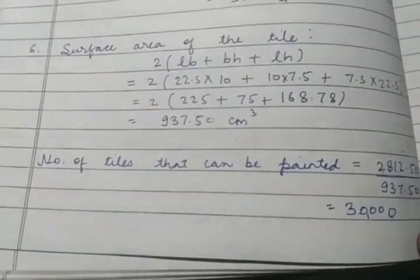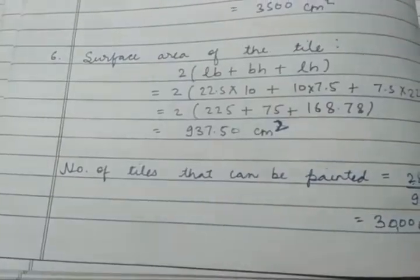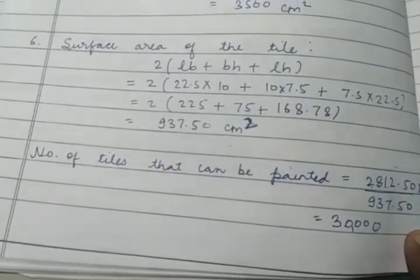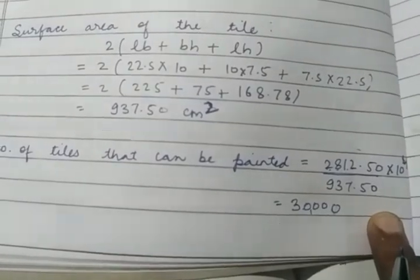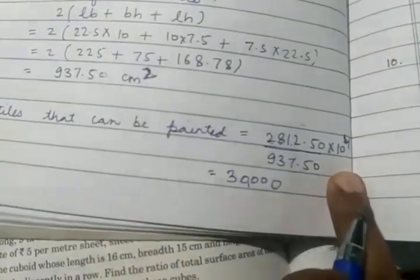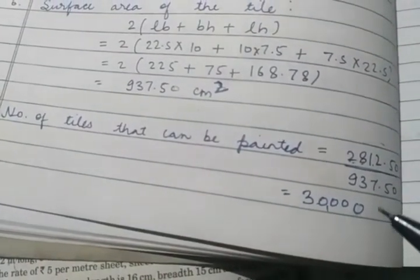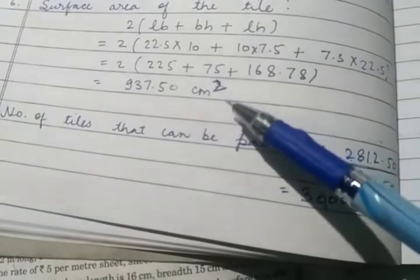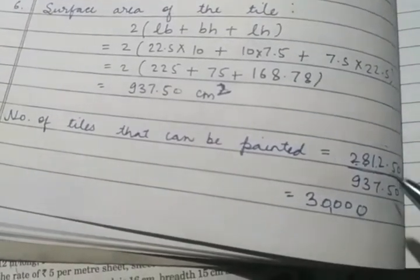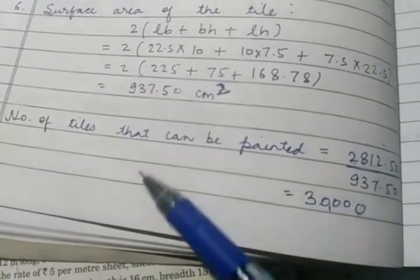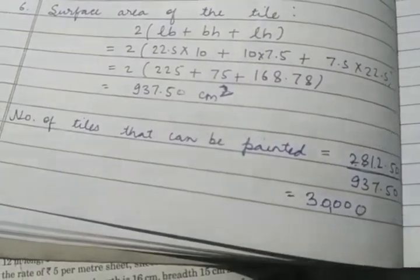So the amount of paint is given to you. If you have to change it in cm square, we need to multiply it by 10 to the 4 for the unit conversion. After division you are going to get that the number of tiles that can be painted in the given amount of paint will be 30,000.